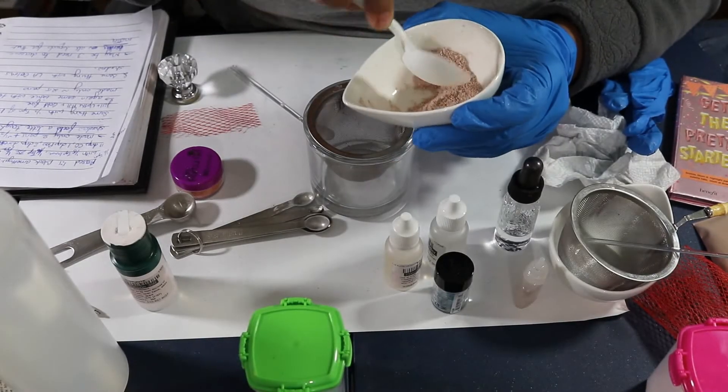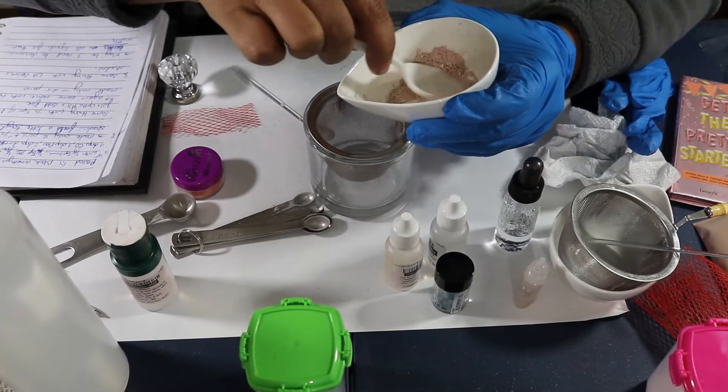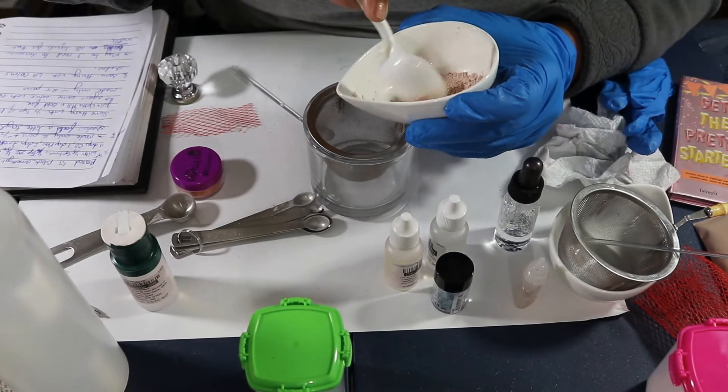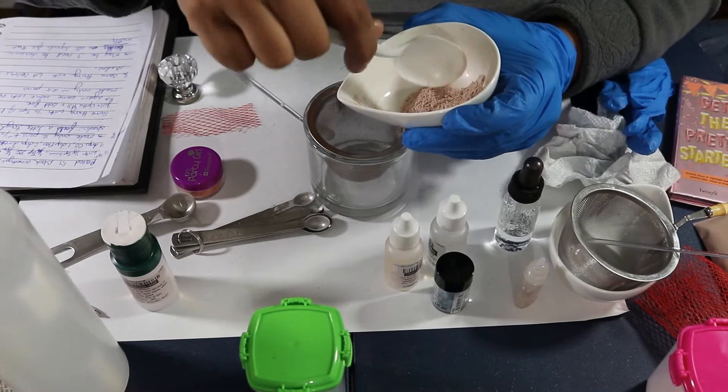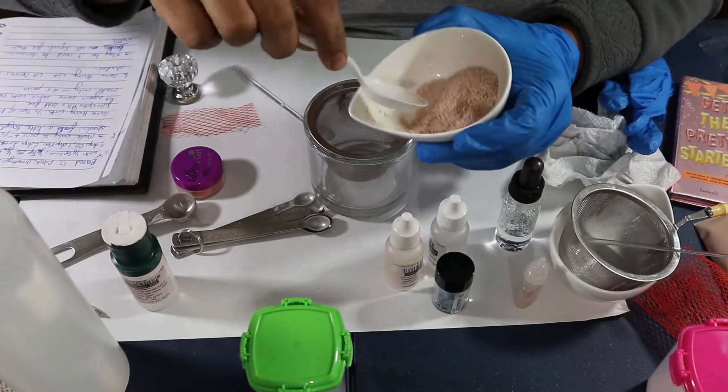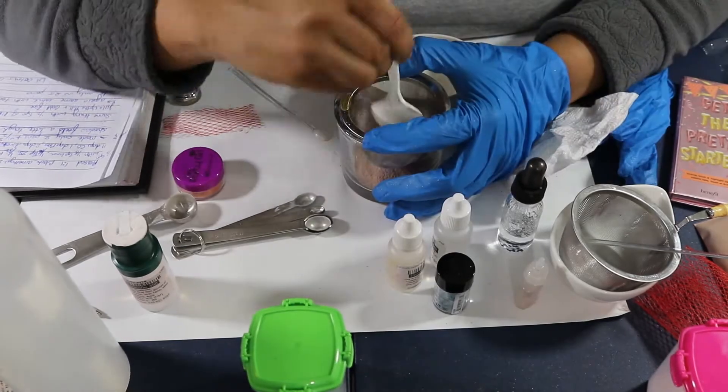This is what it is looking like right now. Granular, it's kind of on the dry side of the wet sand consistency. So I'm debating if I should add a drop of coconut oil to it, but it seems to be getting pressed down decently. So let's just press a pan and then we'll know.